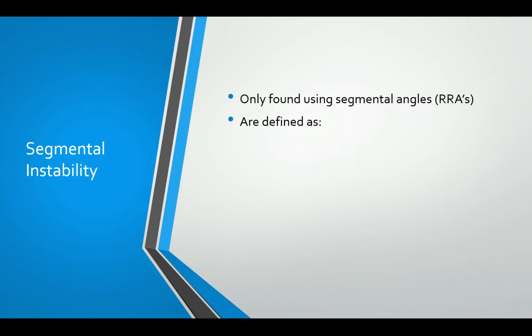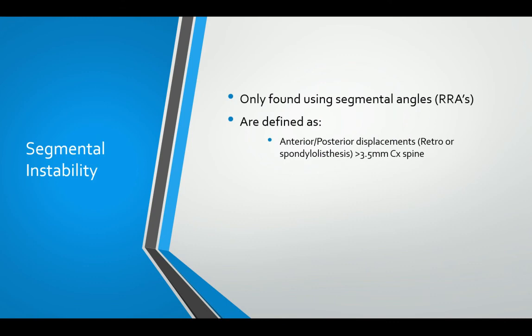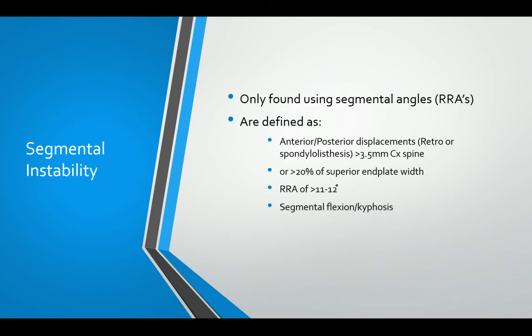Regarding segmental instability: when using the posterior tangent method it's easy to measure segmental stability or instability because you're using the method to find the relative rotation angles or intersegmental angles. Segmental instability is defined as an anterior or posterior translation displacement or spondylolisthesis of greater than 3.5 mm in the cervical spine, or a displacement distance of greater than 20% of the superior end plate's width of the vertebra below. A relative rotation angle of greater than 11 to 12 degrees is also abnormal, and segmental flexion or kyphosis is also seen as a sign of instability or ligamentous damage.